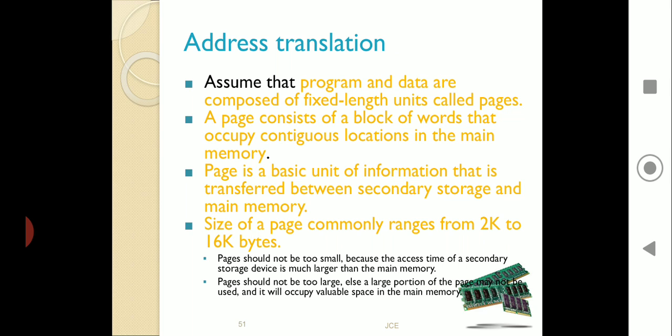The first thing is: let us assume that the program and data are composed of fixed-length units called pages. That means every program and data is divided into units. For example, if I have a program of 100 lines and each page consists of 50 lines, then my total program would consist of 2 pages.